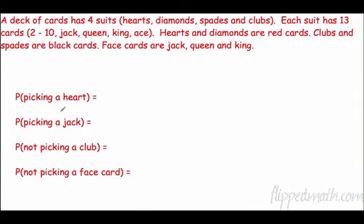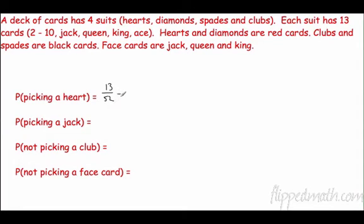A deck of cards has four suits: hearts, diamonds, spades, and clubs. Each suit has 13 cards — numbered cards are two through ten, and face cards are jack, queen, and king. The ace is neither a number card nor a face card. Hearts and diamonds are red; clubs and spades are black. What's the probability of picking a heart? That's 13 out of 52, which reduces to one-fourth — 0.25, or 25%.